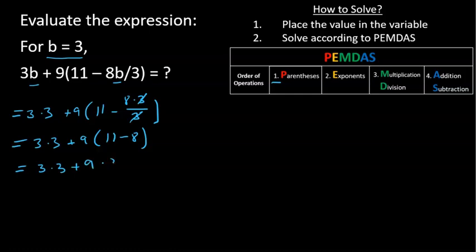9 times 3, we move to multiplication, equals 9 plus 27, and we finish with addition. 9 plus 27 equals 36.